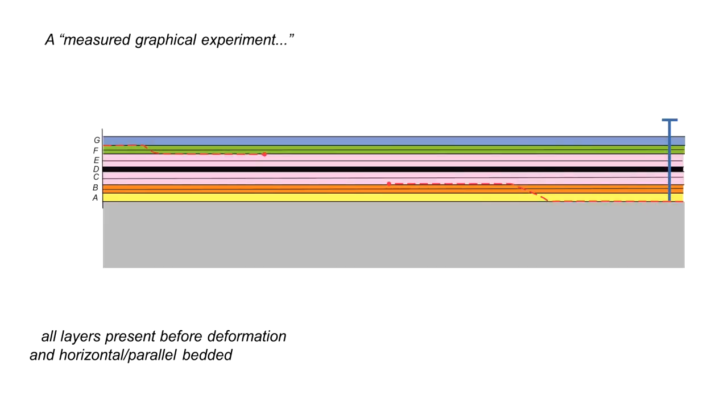So I'm going to illustrate this using a measured graphical experiment and this shows the pre-deformation state where all the layers are present that in this case is A through to G the youngest and all are horizontal and parallel bedded. On the right hand side I've created a marker shown by that blue vertical line.